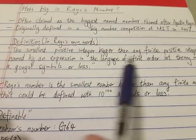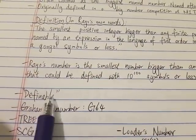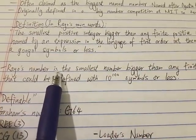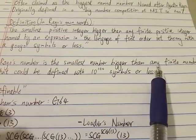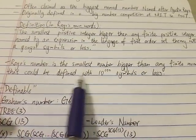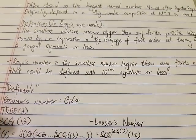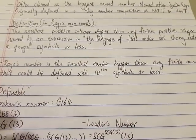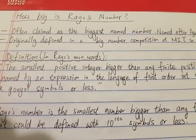It's kind of like a play of words. So it all depends on the word definable. The meaning is that Rayo's number is the smallest number bigger than any finite number that could be defined with a googol symbols or less. So it's something like a play of words. So there we have it, Rayo's number. Thanks for watching. Have a nice day.